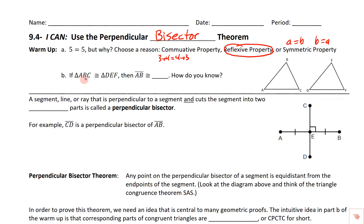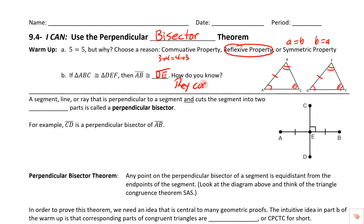If triangle ABC is congruent to triangle DEF, then AB is congruent to the corresponding side on the other triangle. A corresponds to D — they're in the same place in the naming. So those two angles are congruent, and B and E would be congruent. The triangles are exactly the same size and shape, so if I put a mark on AB, I'd put a corresponding mark on DE. The reason is that they correspond and they're on congruent triangles.